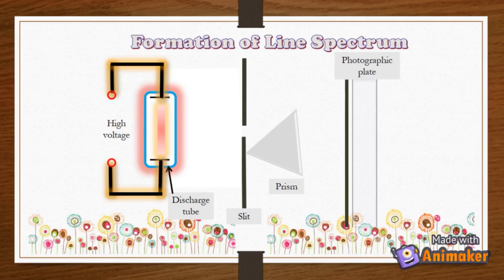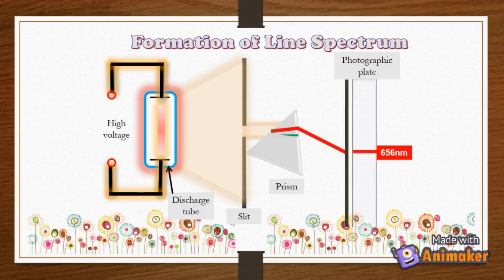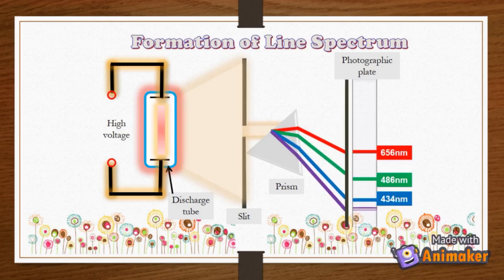The emitted light will pass through a slit, then it is separated into its component colors by a prism. Each component color is focused at a definite position according to its wavelength. It forms a colored image on a photographic plate. The colored images are called spectral lines.